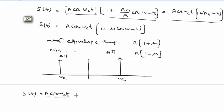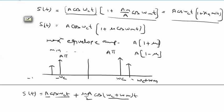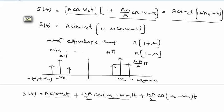The first sideband term is (μA/2) cos(ω_C + ω_M)t at frequency (ω_C + ω_M), and also at -(ω_C + ω_M). The upper sideband magnitude is μA/2 · π due to the cosine. Similarly, (μA/2) cos(ω_C - ω_M)t is the lower sideband, with equal height, at ±(ω_C - ω_M). This gives the complete spectrum for single-tone AM.